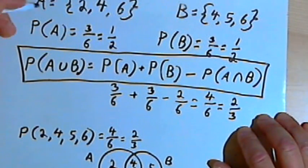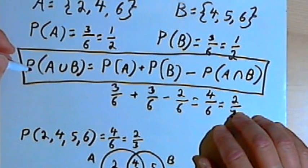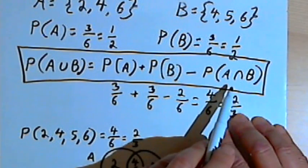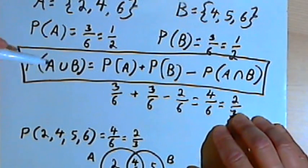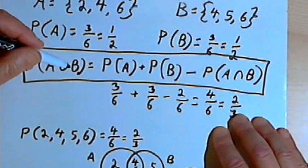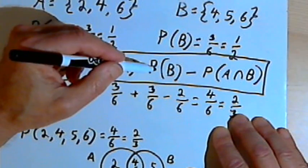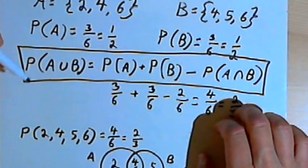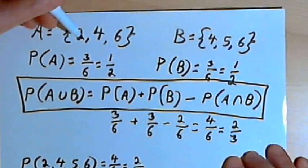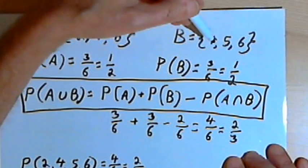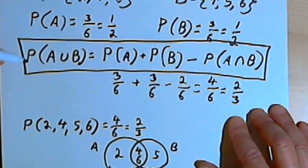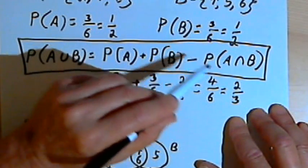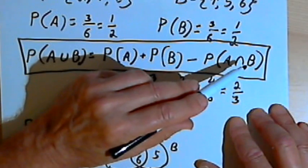Here's what this means in terms of what you need to memorize. If I have mutually exclusive events with no overlap, the intersection of those two events is zero. So the formula P(A∪B) = P(A) + P(B) − P(A∩B) still works — you're just subtracting zero. For non-mutually exclusive events with overlap, I use the same formula: the probability of A or B equals the probability of A plus the probability of B minus the probability of the intersection of A and B.